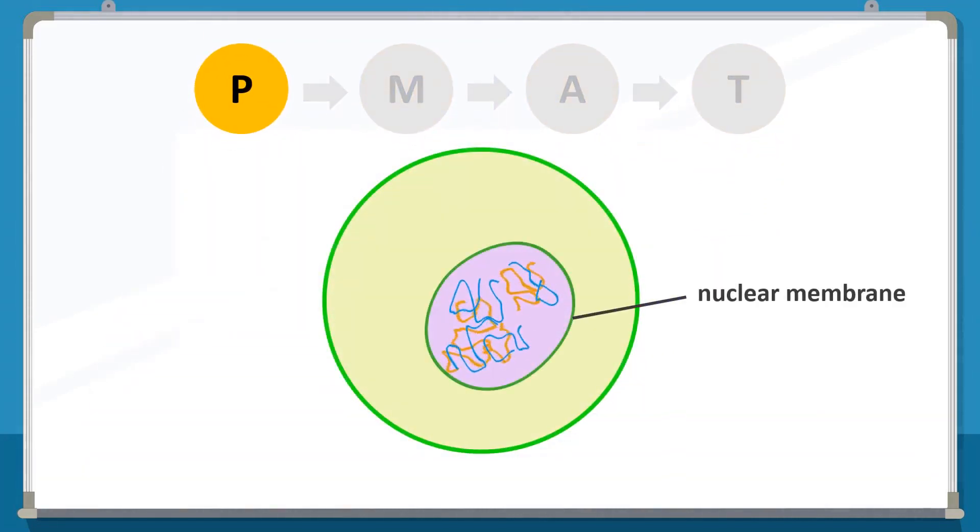During the first stage of mitosis, that is prophase, the chromosomes become visible and can be seen clearly under a microscope, and the nucleolus and the nuclear membrane disappear.